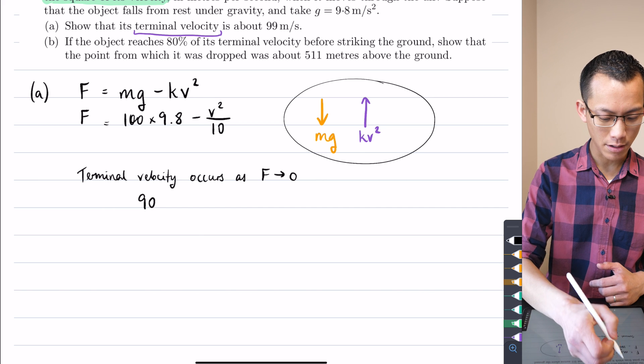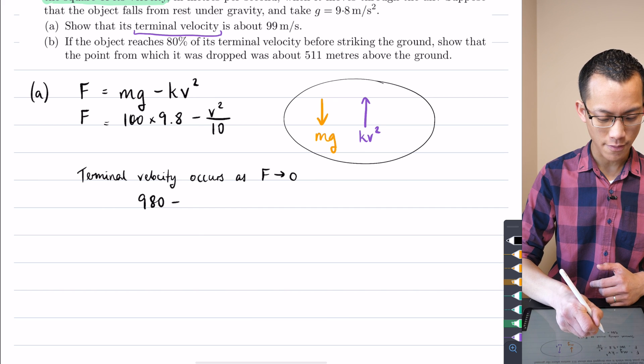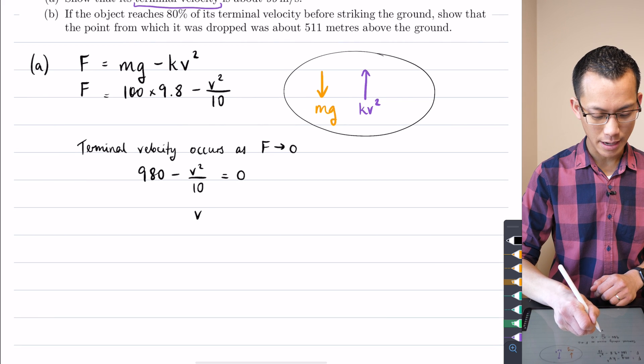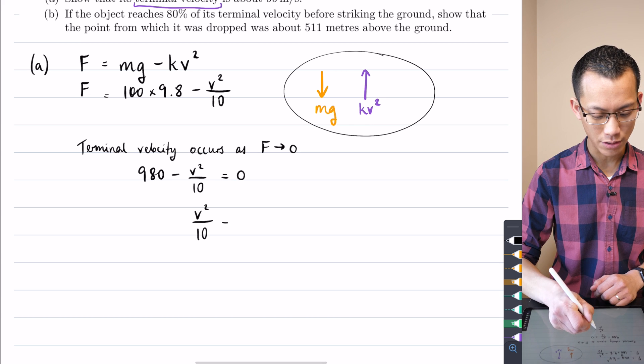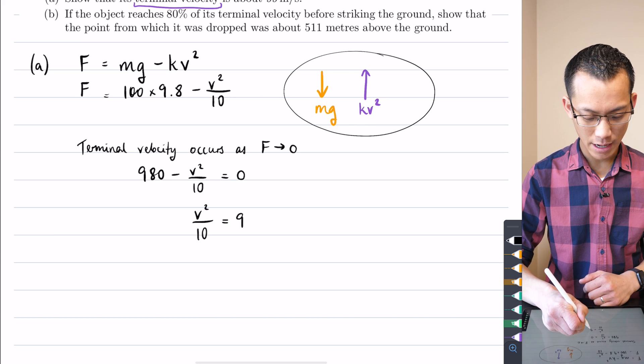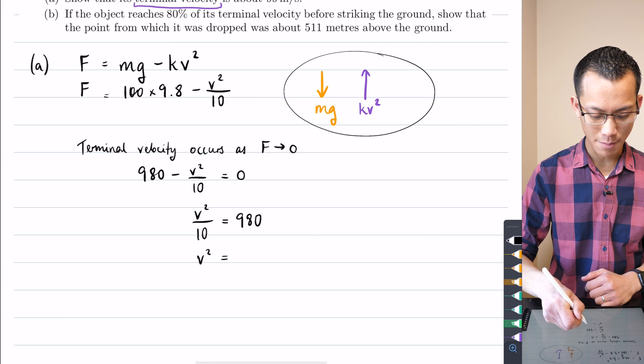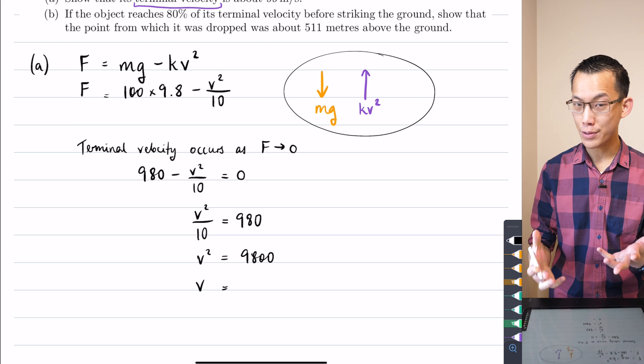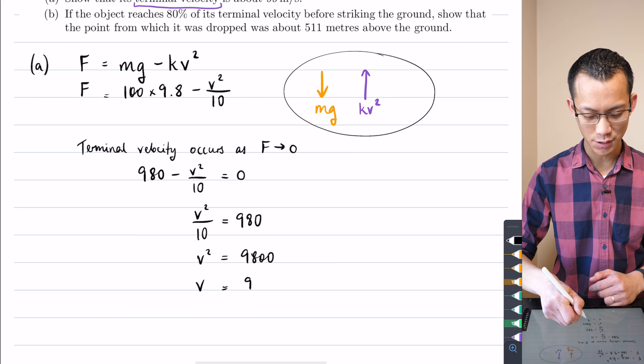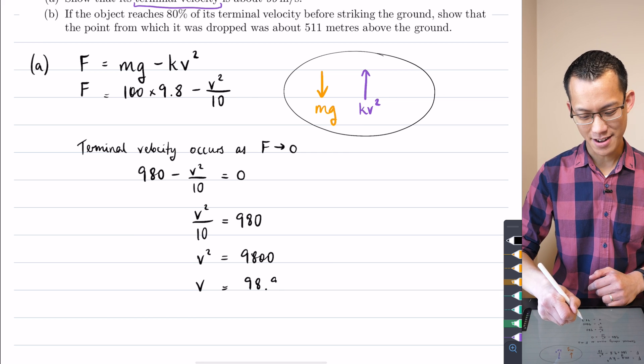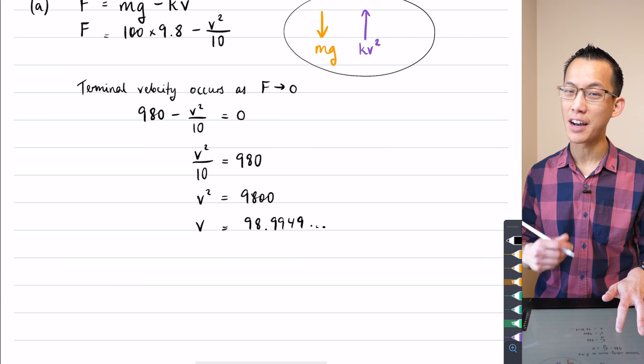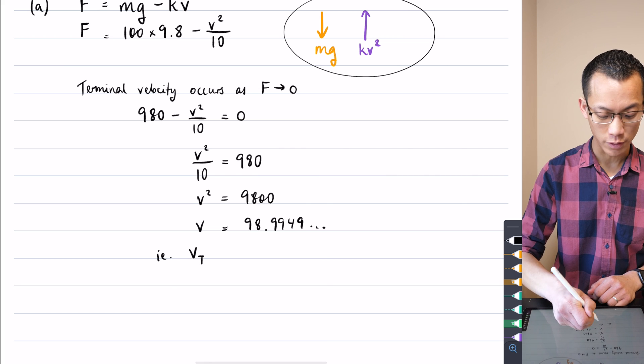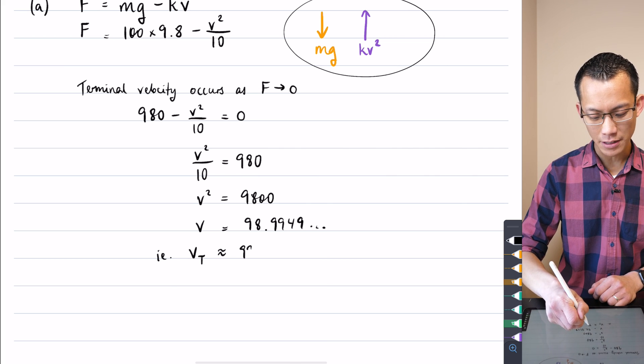So I've got, I guess that's 980, on the left-hand side, minus v² on 10. That's equal to zero. I'm going to add v² on 10 to both sides and pop this on the left-hand side. So that gives me this. V² multiplying through by 10 gives me 9,800. And v is going to be the square root of 9,800, which I've already chucked into my calculator. And it's something like 98.99, et cetera. A lot of things which are going to round up. So in other words, I've got a velocity, a terminal velocity, I should say, of about 99 meters per second.